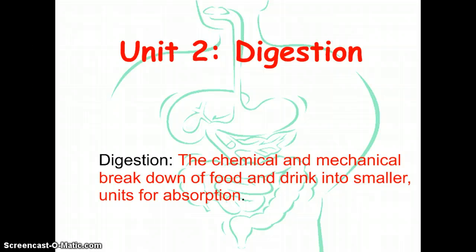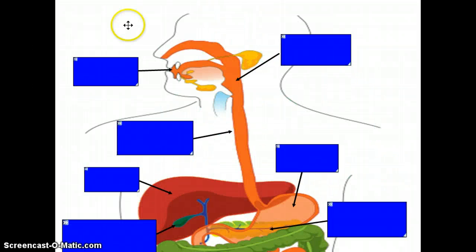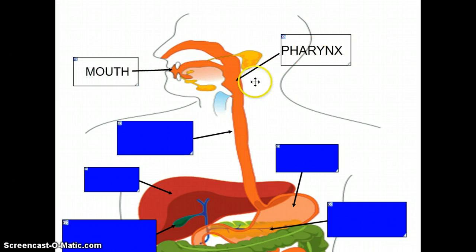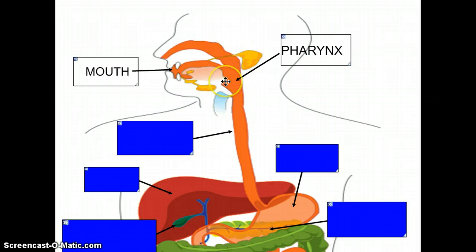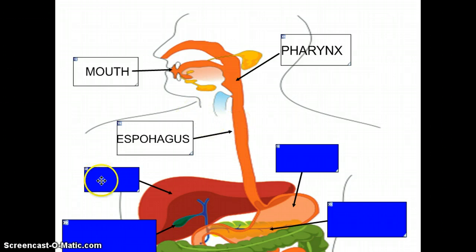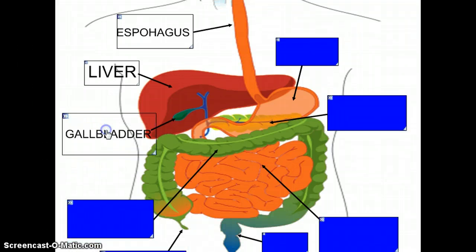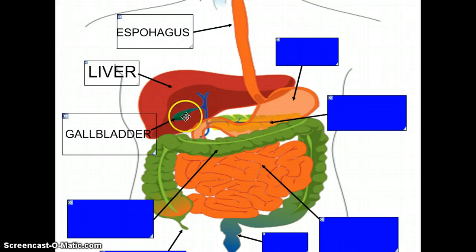It's important that you know the structures involved with the digestive system. You have the mouth, you have the pharynx — the pharynx is basically the place where the oral cavity and the nasal cavity meet, right above the esophagus. Here's your pharynx, and this is your esophagus. This is your liver. Your gallbladder — your liver creates bile, which is a green substance stored in the gallbladder after it's made.